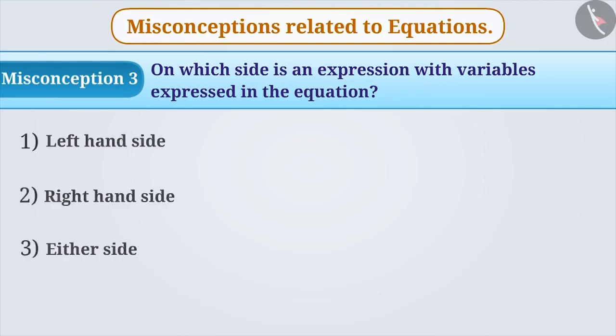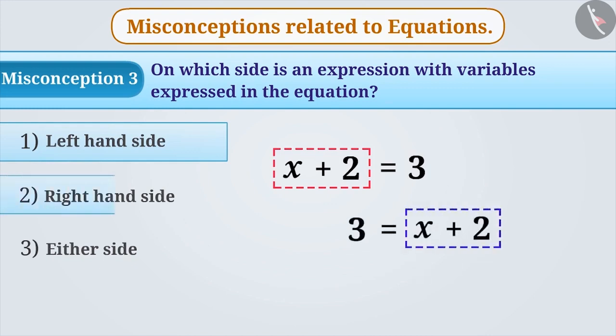We are so used to expressing equations with variables on the left-hand side that we find it wrong to express them on the right-hand side. The correct understanding is that we can express them on either side of the equation.